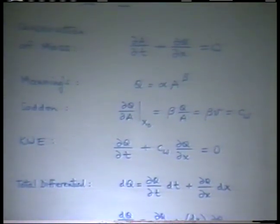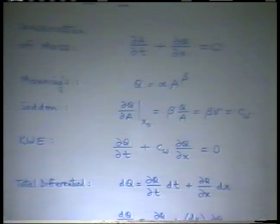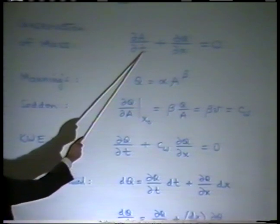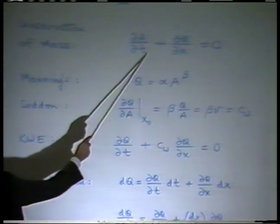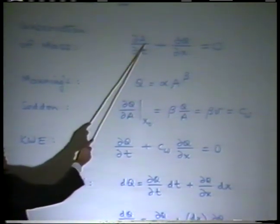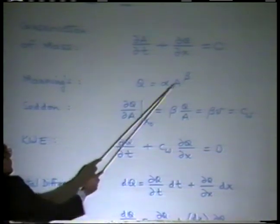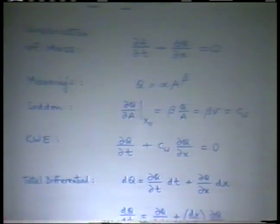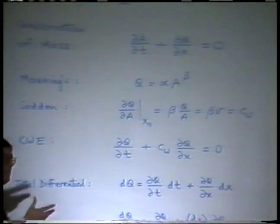One may ask: if Manning's is steady flow, then where is the unsteadiness? The answer is in the conservation of mass equation. In essence, what we're doing is combining an unsteady flow equation for mass with the steady flow equation for momentum. When you put together an unsteady component with a steady component, what you get in the end is unsteady. So it is an unsteady flow concept in the kinematic wave.